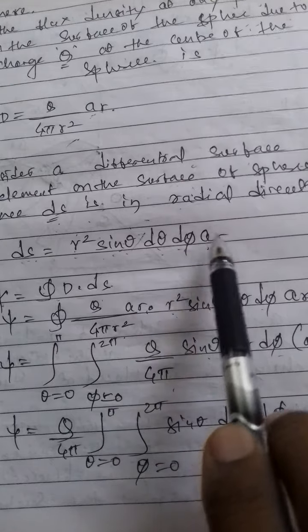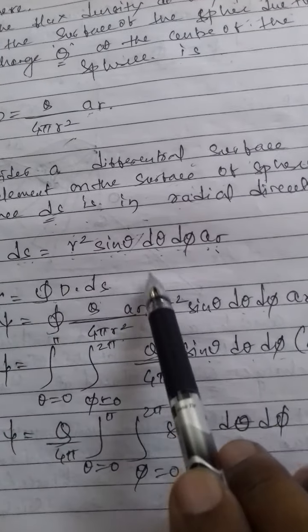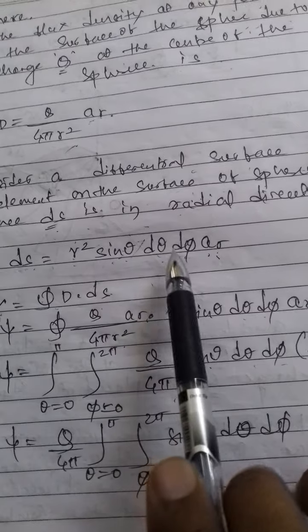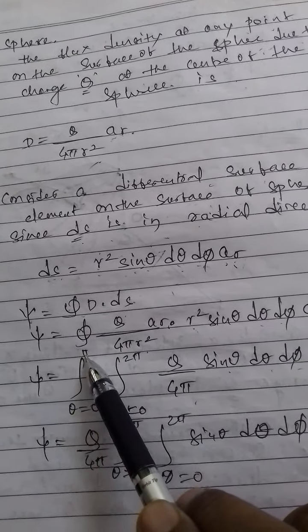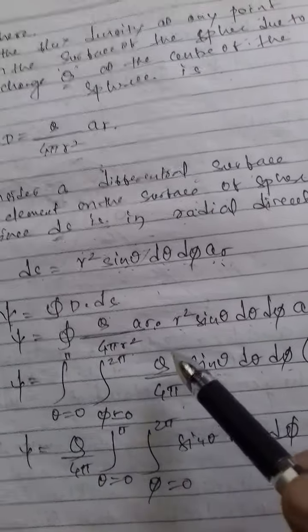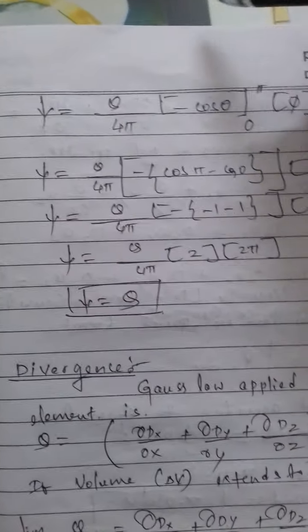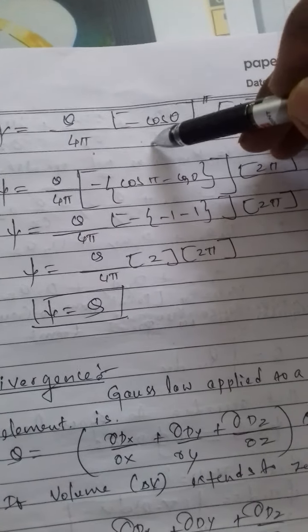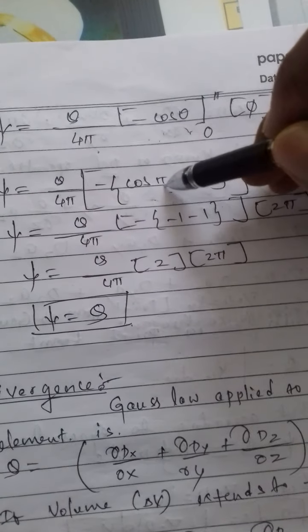The total electric flux passing through the sphere is ψ = ∮ D · dS = ∫(θ=0 to π) ∫(φ=0 to 2π) [Q/(4π)] sin theta dθ dφ, since aᵣ · aᵣ = 1. Evaluating the integration of sin theta gives minus cos theta, yielding the result.